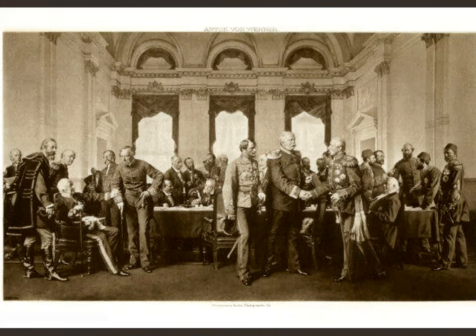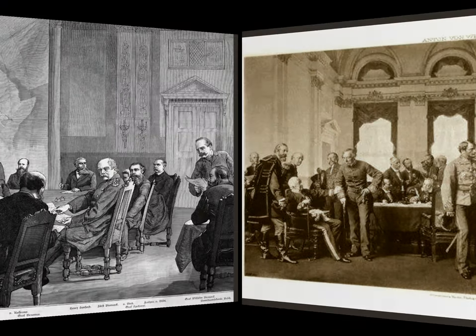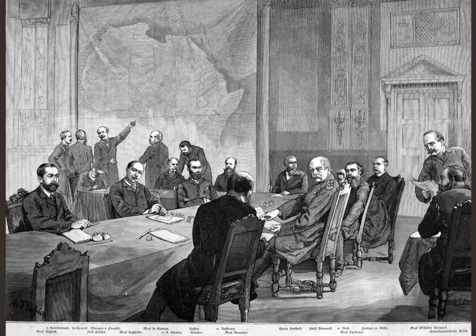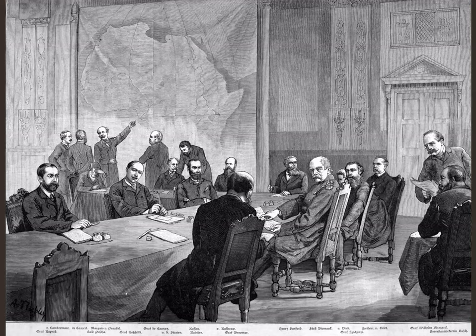This is the Berlin Conference — you can see Bismarck and all the leaders of Europe sitting down trying to carve it all up. There's a big, huge map of Africa in the back, led by the central figure of Bismarck. It should make sense that Germany and Bismarck are leading a conference held in the capital city of Germany — Berlin.